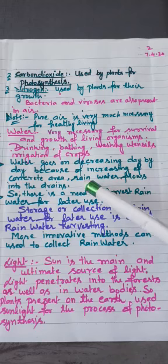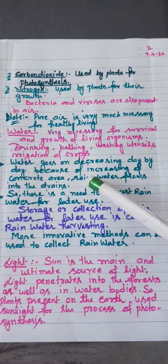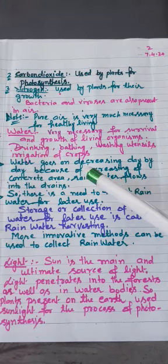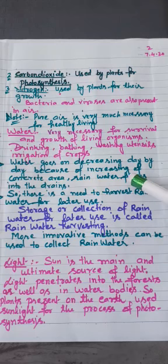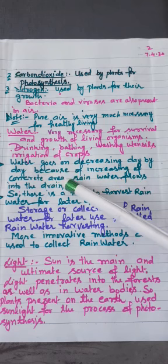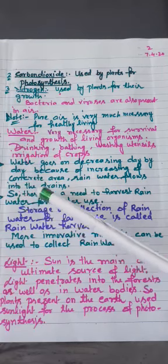Earlier, rainwater would seep into the ground when there was not too much concrete area. But nowadays, all the water which comes on the earth during the rain flows into the drains.